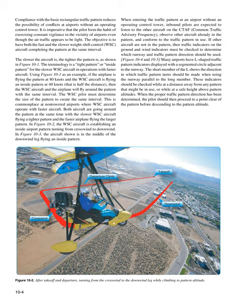Both aircraft are going around the pattern at the same time, with the slower WSC aircraft flying a tighter pattern and the faster airplane flying the larger pattern. In Figure 10-2, the WSC aircraft is establishing an inside airport pattern turning from crosswind to downwind. In Figure 10-3, the aircraft shown is in the middle of the downwind leg flying an inside pattern.